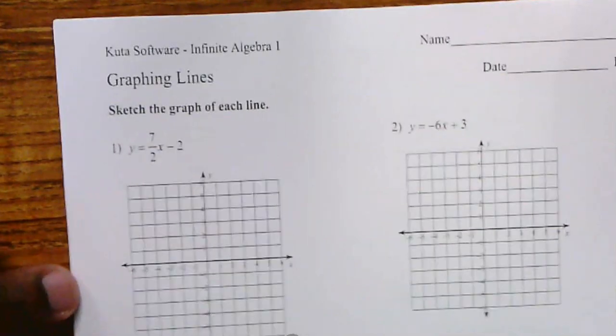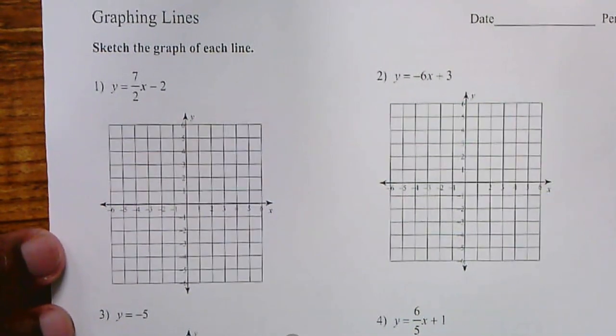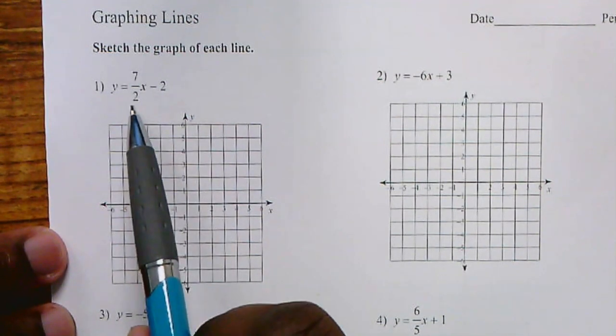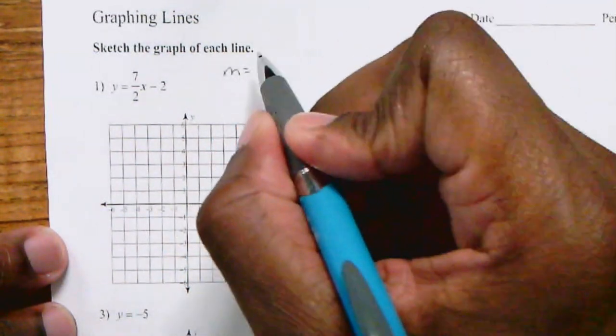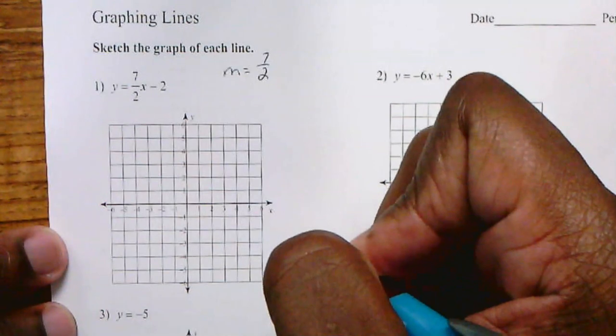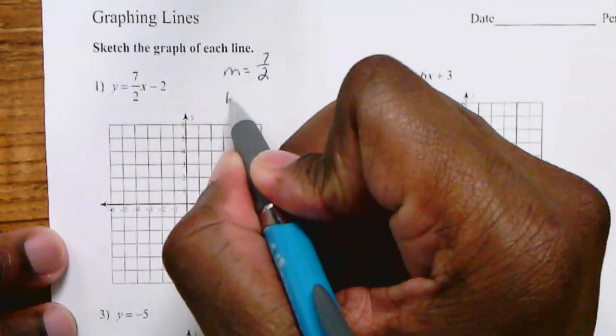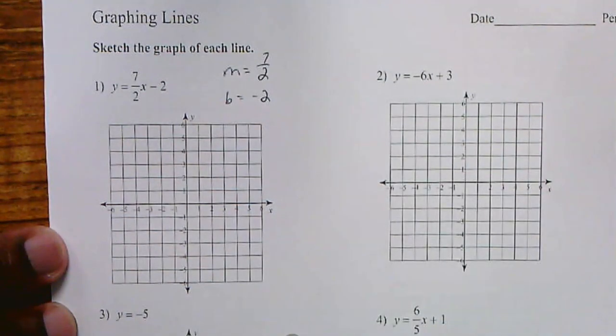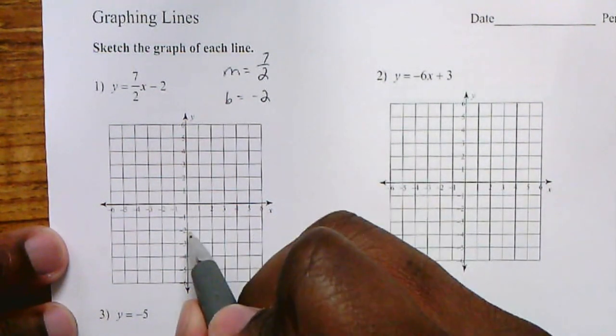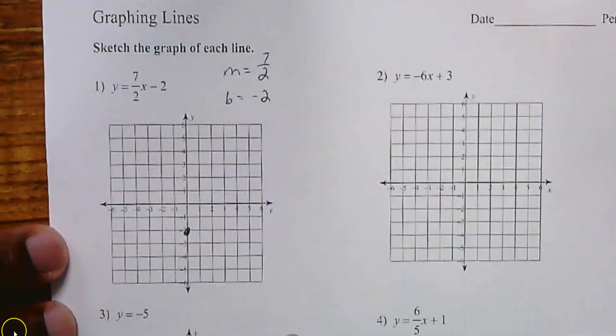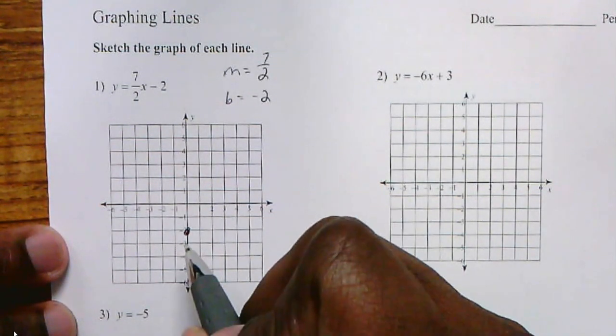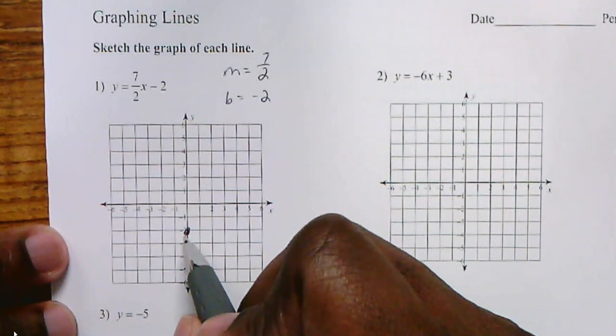Let's actually do some problems. In this graph, it says sketch the graph of the line y equals 7 over 2x subtract 2. In this line, my slope m is 7 over 2. My y-intercept is negative 2. The y-intercept is the place where it crosses the y-axis, so my intercept is right here at negative 2.